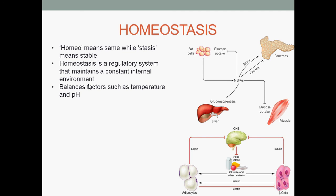Let's look at a regulatory system that the body uses to maintain a stable internal environment, called homeostasis. Homeo means same while stasis means stable. Hence homeostasis is a regulatory system that maintains a constant internal environment by balancing factors such as temperature, pH, and blood glucose.